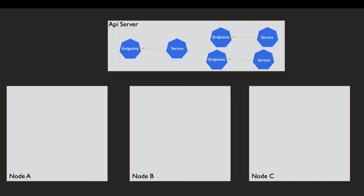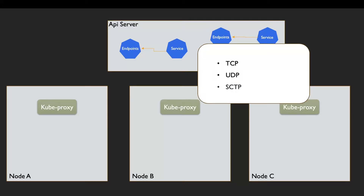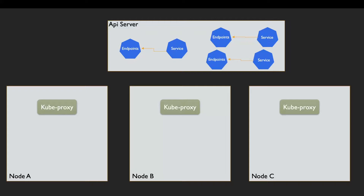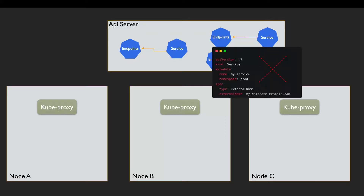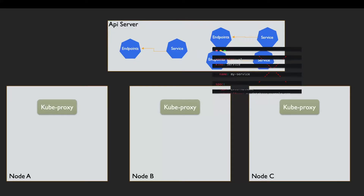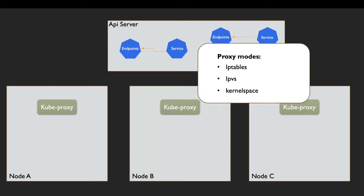In a Kubernetes cluster, every node has its own kube-proxy running. Kube-proxy can also forward different types of data streams like TCP, UDP, and SCTP. The kube-proxy component is responsible for implementing a virtual IP mechanism for services, other than the ExternalName type. Kube-proxy starts up in different modes like iptables, IPVS, and kernel space for Windows. In this video we focus on iptables.